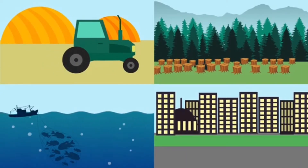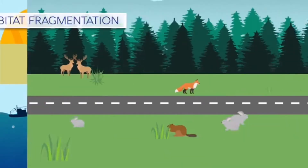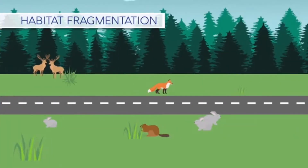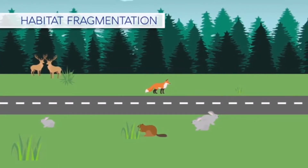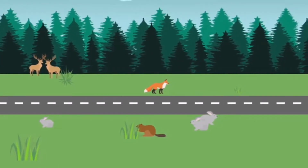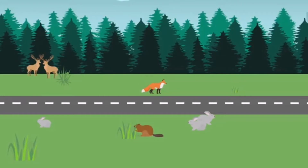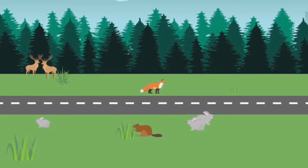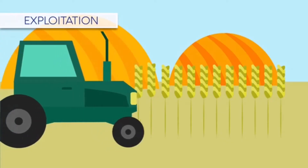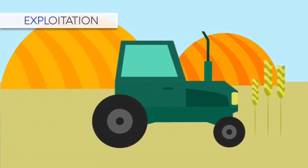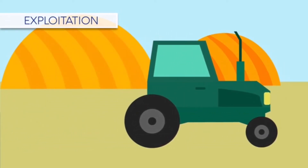Habitats have been destroyed in favor of agriculture, forestry, fishing, urbanization, and manufacturing. Habitat loss greatly reduces species richness. Habitat fragmentation has also split habitats into smaller pieces through development such as roads or housing.